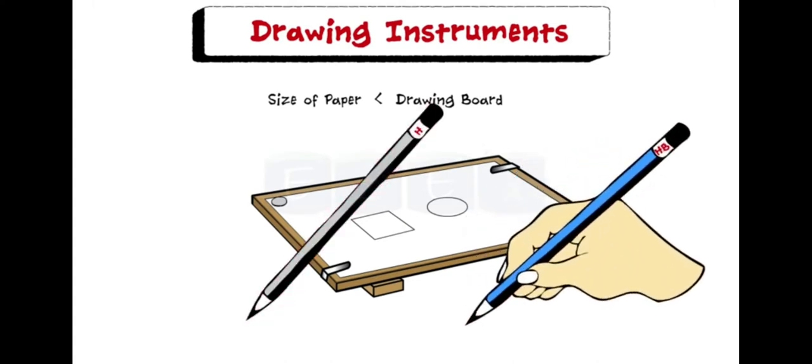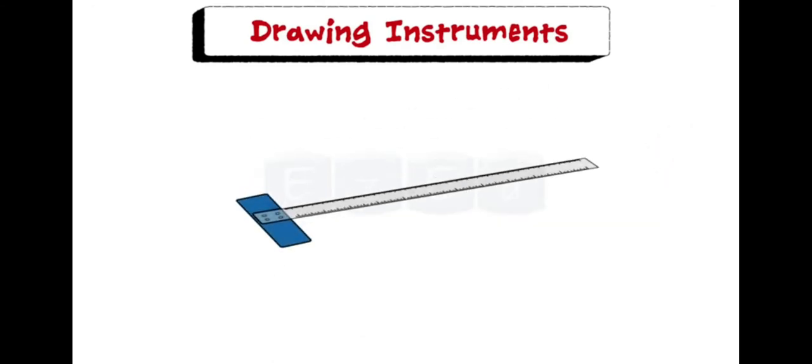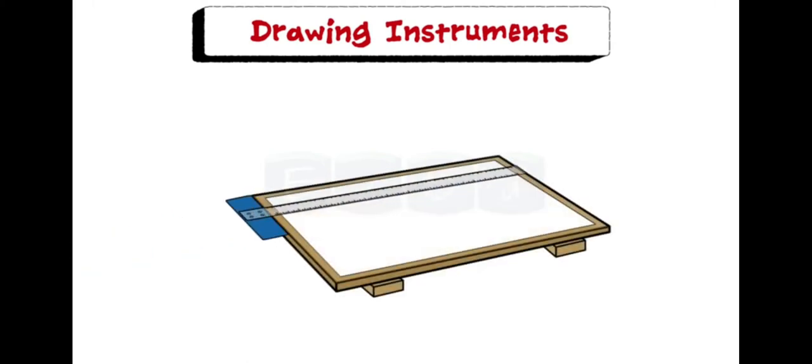Next is the T-square. It is made of two parts: the stock and the blade, which are joined together at right angles by means of screws and pins. The T-square is fitted at the side of the drawing board and it slides along the edge of the board. It is used to draw horizontal straight lines.